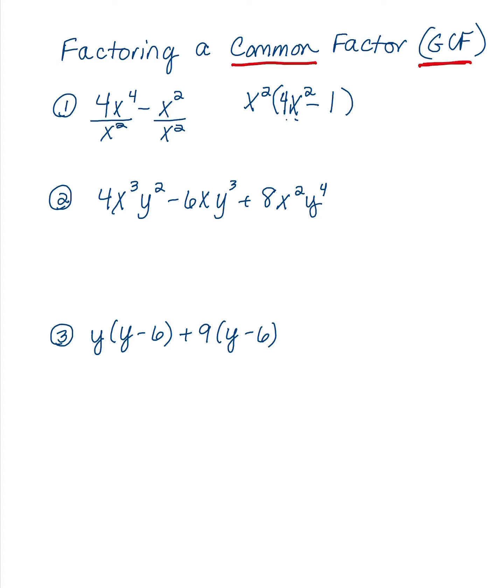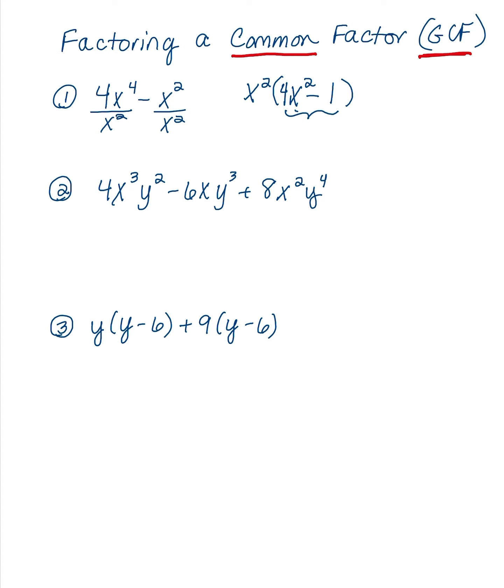So this would be my result after factoring out the GCF. Now a little note here, this binomial actually factors more. It actually factors to 2x plus 1 and 2x minus 1, and we would leave that x squared on the front. We will be talking about that in another video. But for now we're just focusing on just getting this greatest common factor factored out.